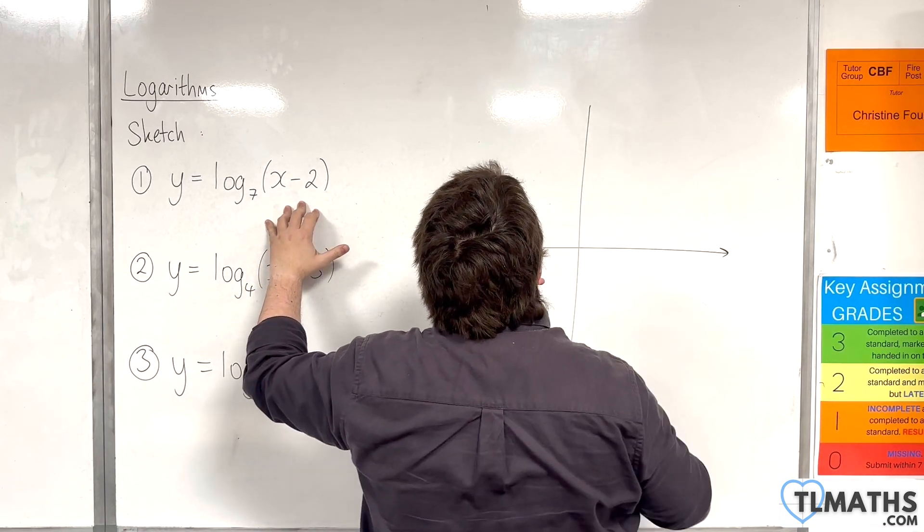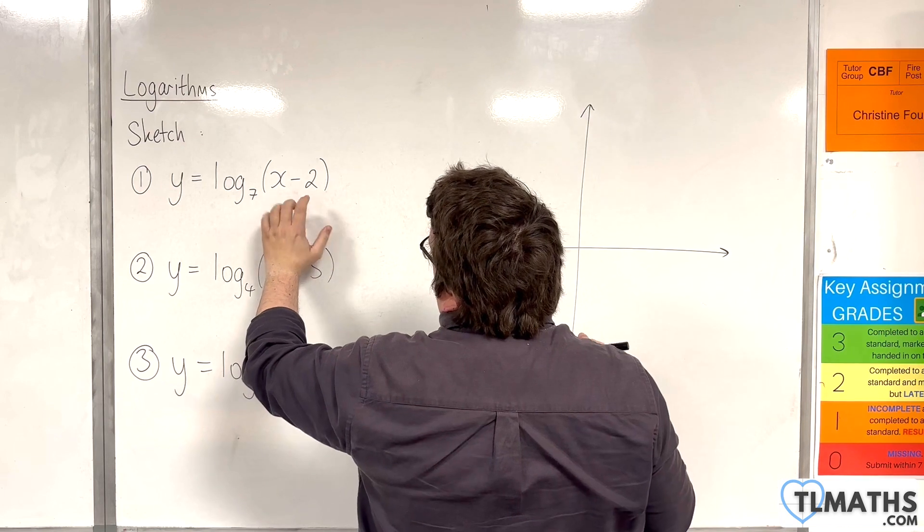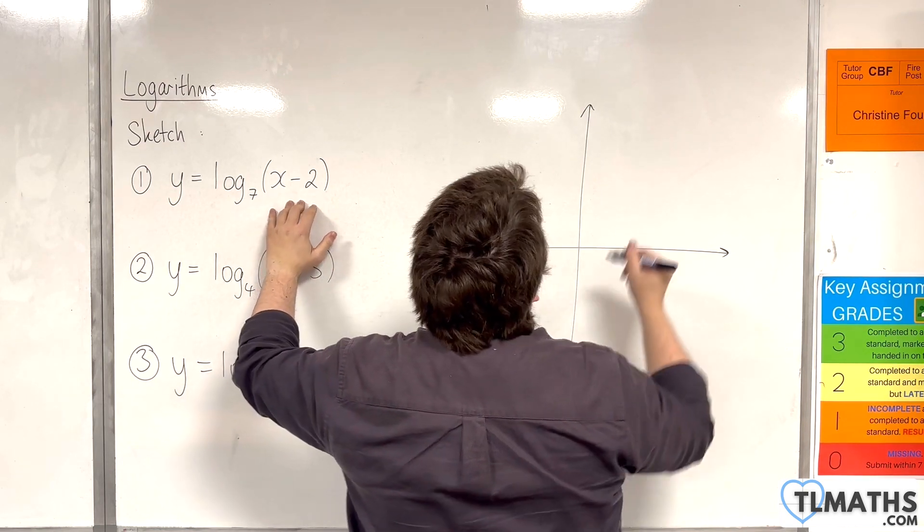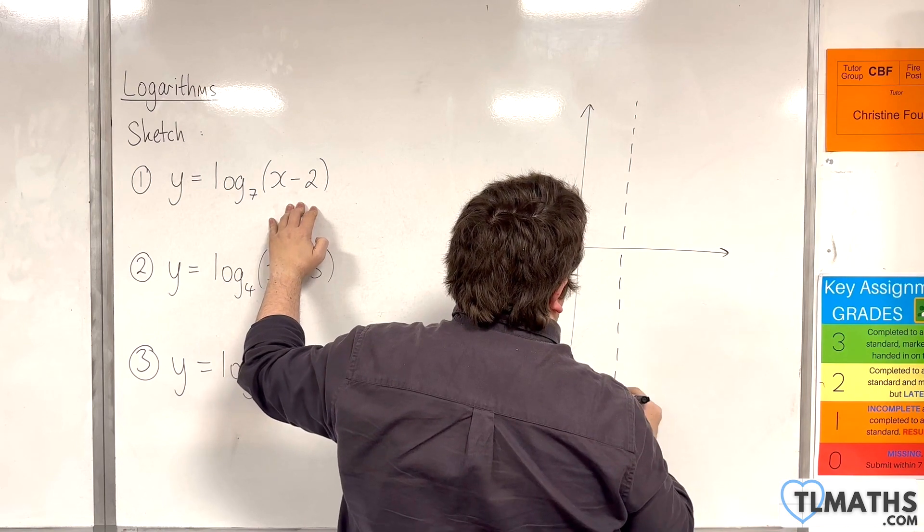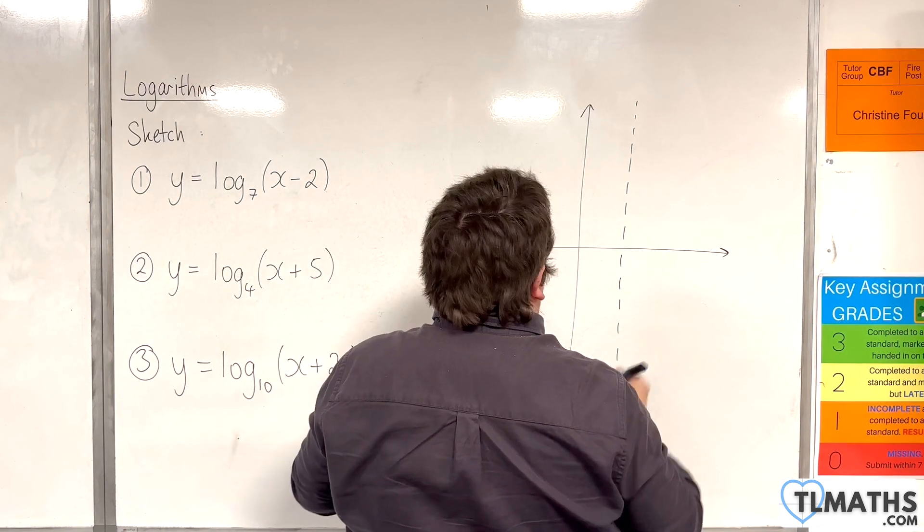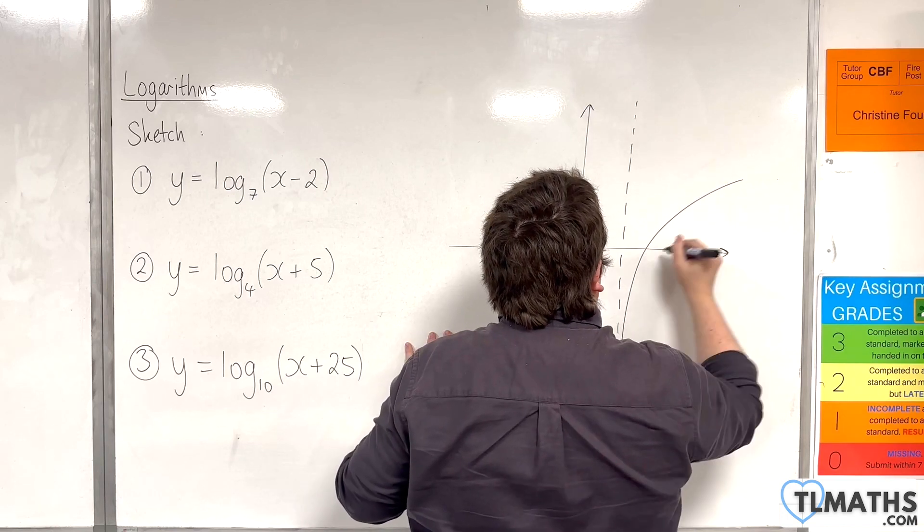So the first thing to identify is the vertical asymptote, which is when this bracket is 0, so that will be at x equals 2. So then our logarithmic curve will look something like this.